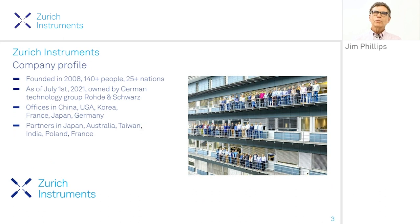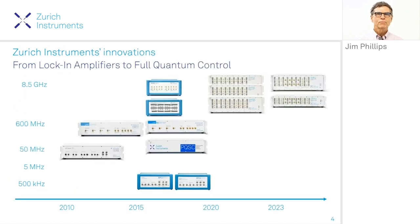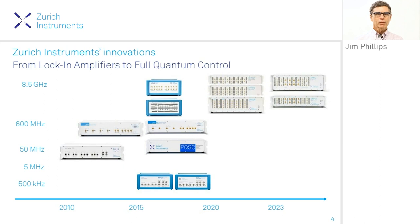Zurich Instruments was founded in 2008. We've grown to be a worldwide company — it's a wonderfully fun place to work. We make lock-in amplifiers, impedance analyzers, arbitrary waveform generators, and quantum computing control systems that work from under a millihertz to eight and a half gigahertz.